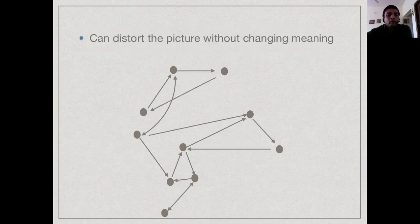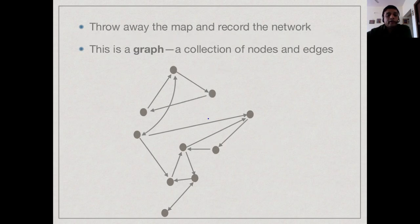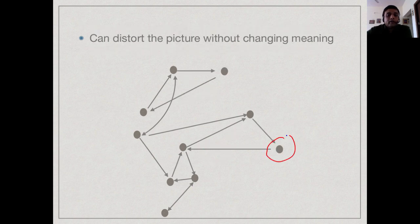Now one nice thing about moving to this abstract level is that the actual picture can be distorted without changing its meaning. So we can move, for instance, if you look at this city here, we can move it to the right and it does not make any difference in terms of solving the problem.